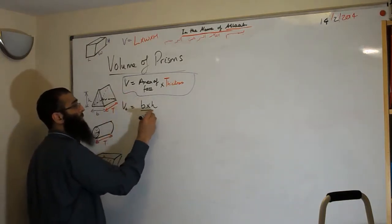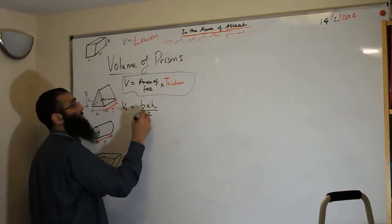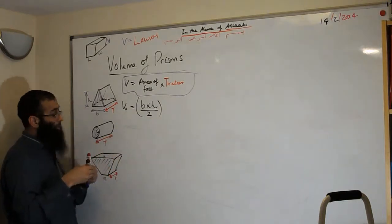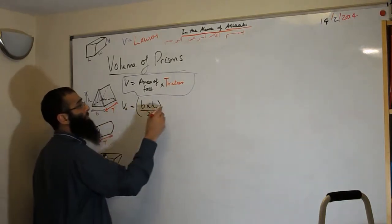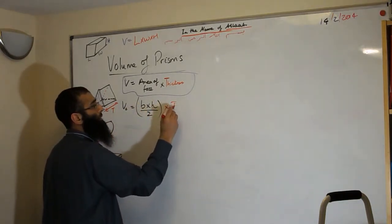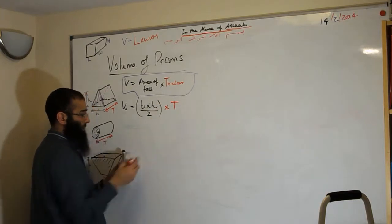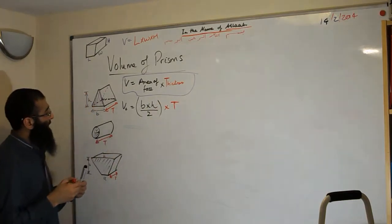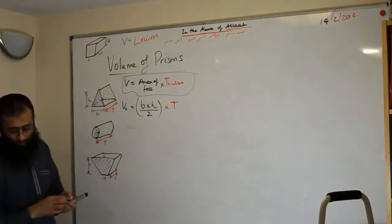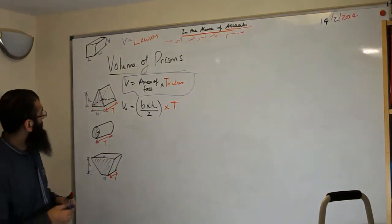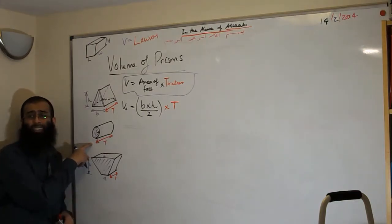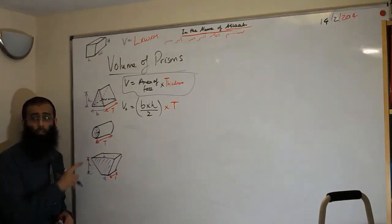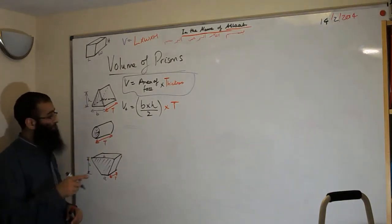Base times height divided by two — that gives the area of the triangular face. Then you multiply it by the thickness T, whatever that number is.